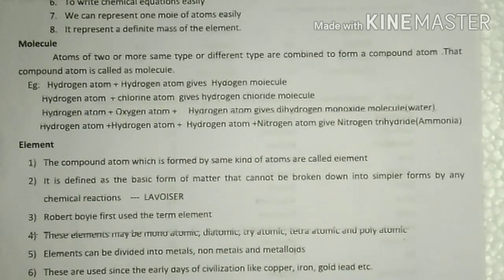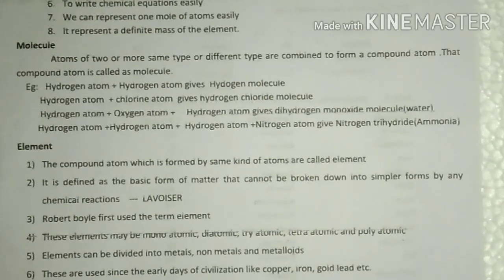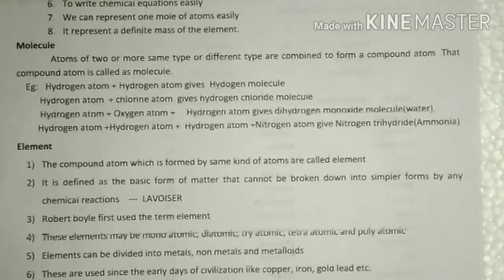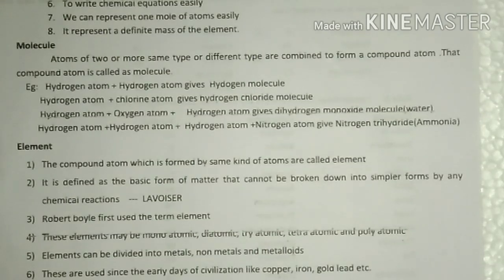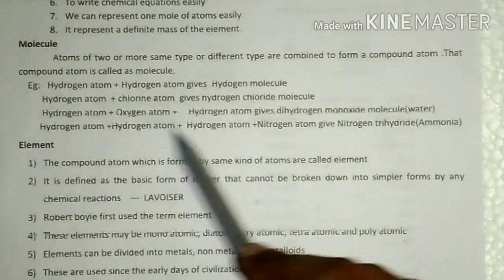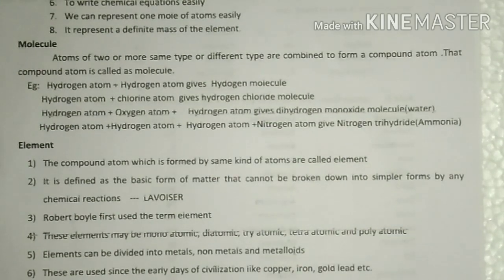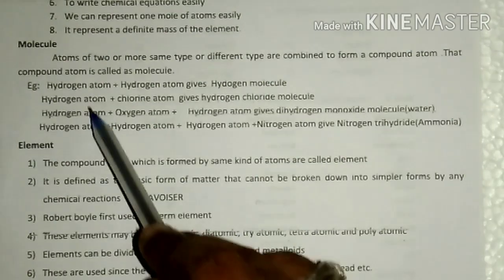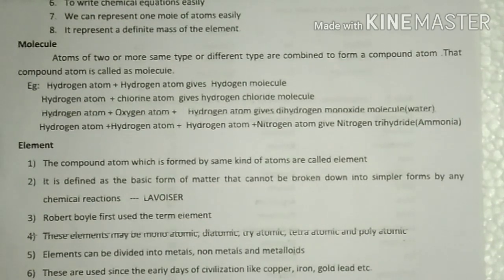Here, the two atoms are the same kind. Similarly, oxygen molecule is formed by oxygen atom and oxygen atom; nitrogen molecule by nitrogen atom and nitrogen atom. Ozone molecule is formed by oxygen atom plus oxygen atom plus oxygen atom — three same oxygen atoms combined. But hydrogen atom and chlorine atom combined to give hydrogen chloride molecule, which is formed by the combination of different atoms. So molecules are formed by the combination of either same kind of atoms or different kinds of atoms.